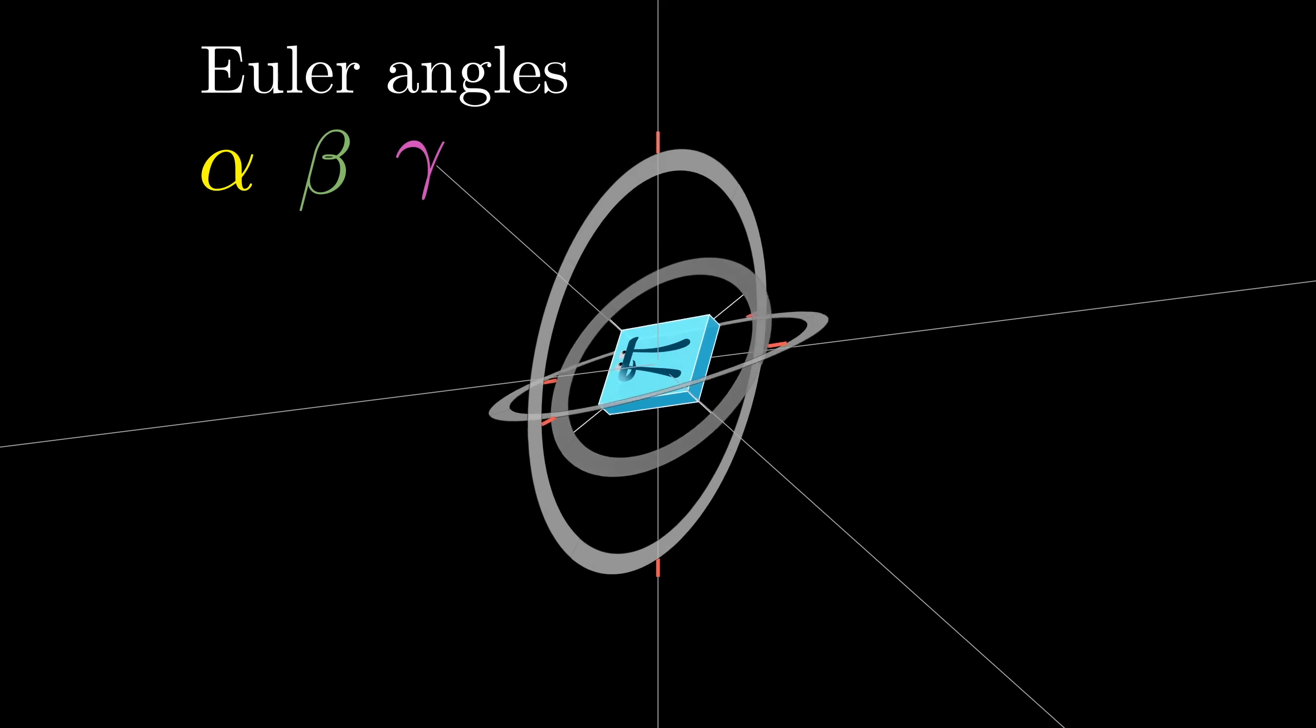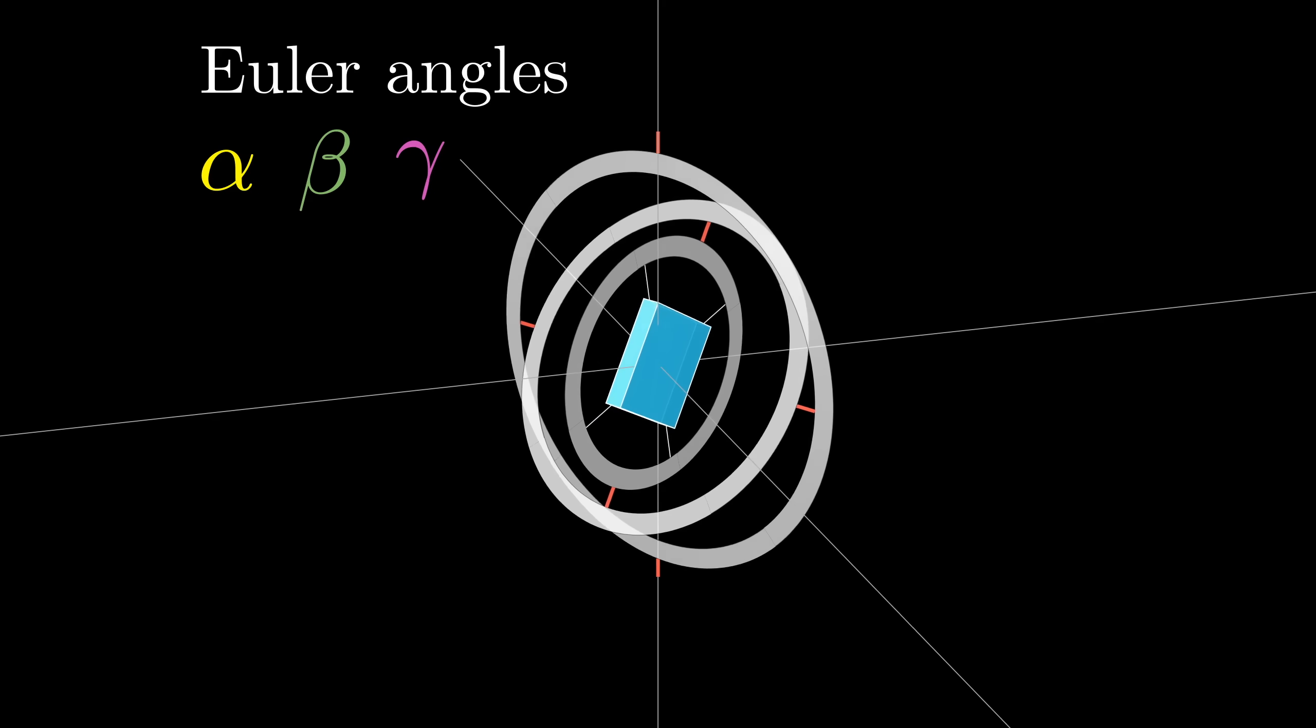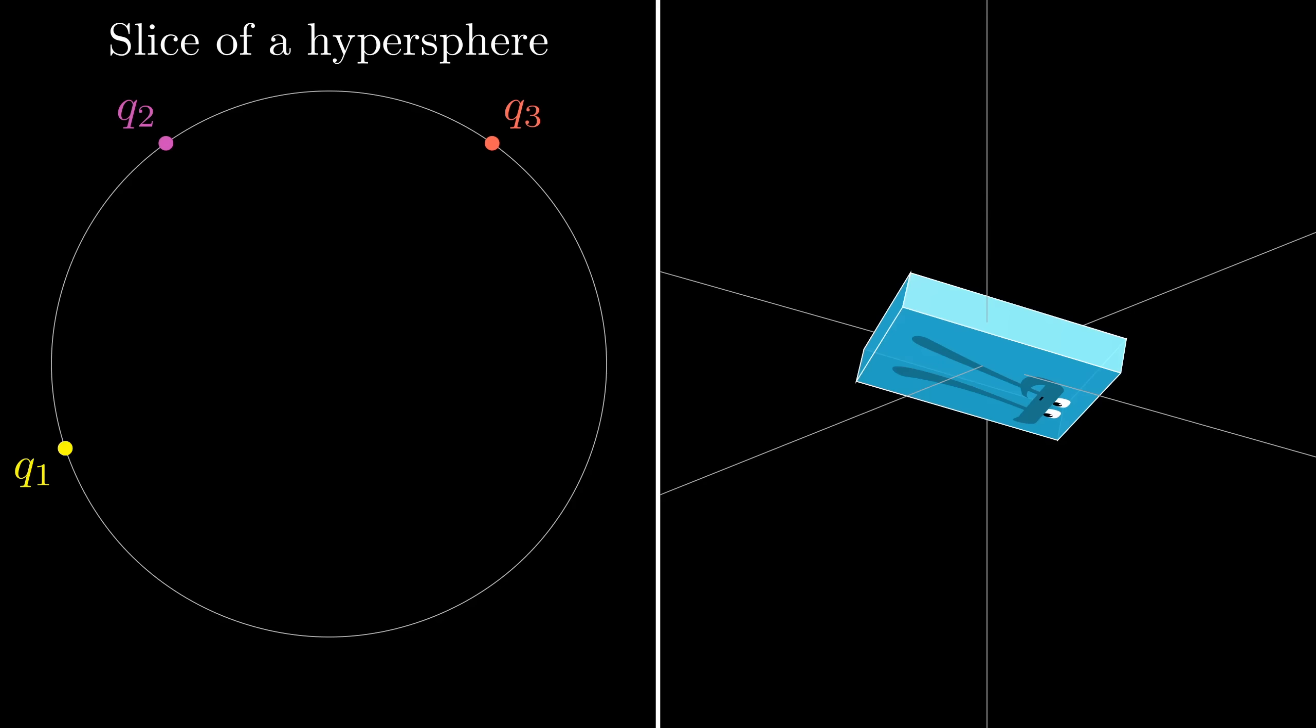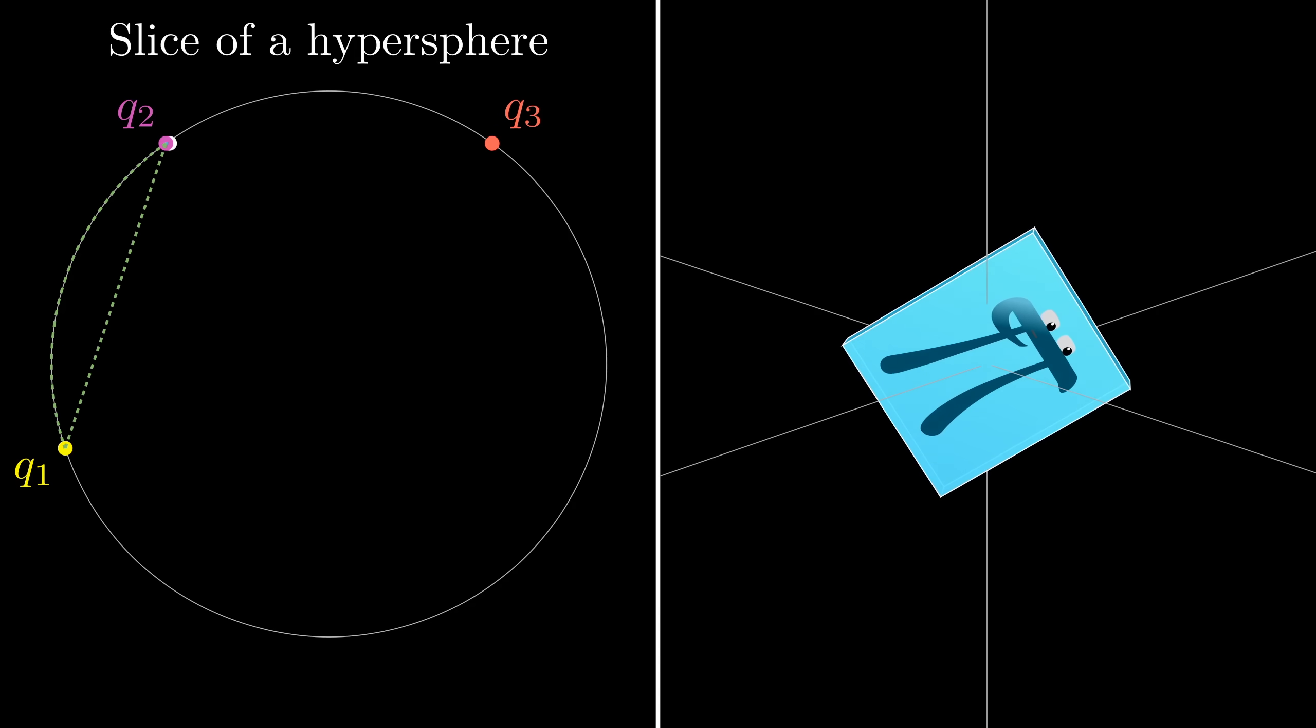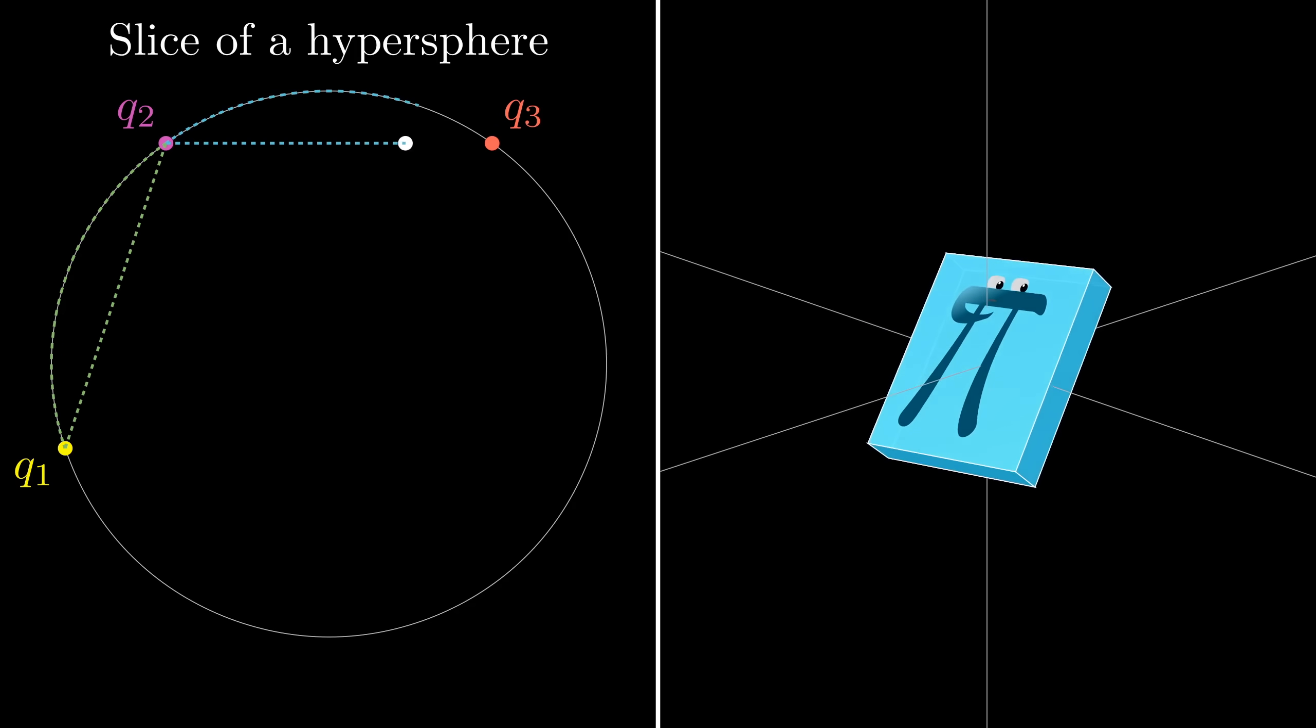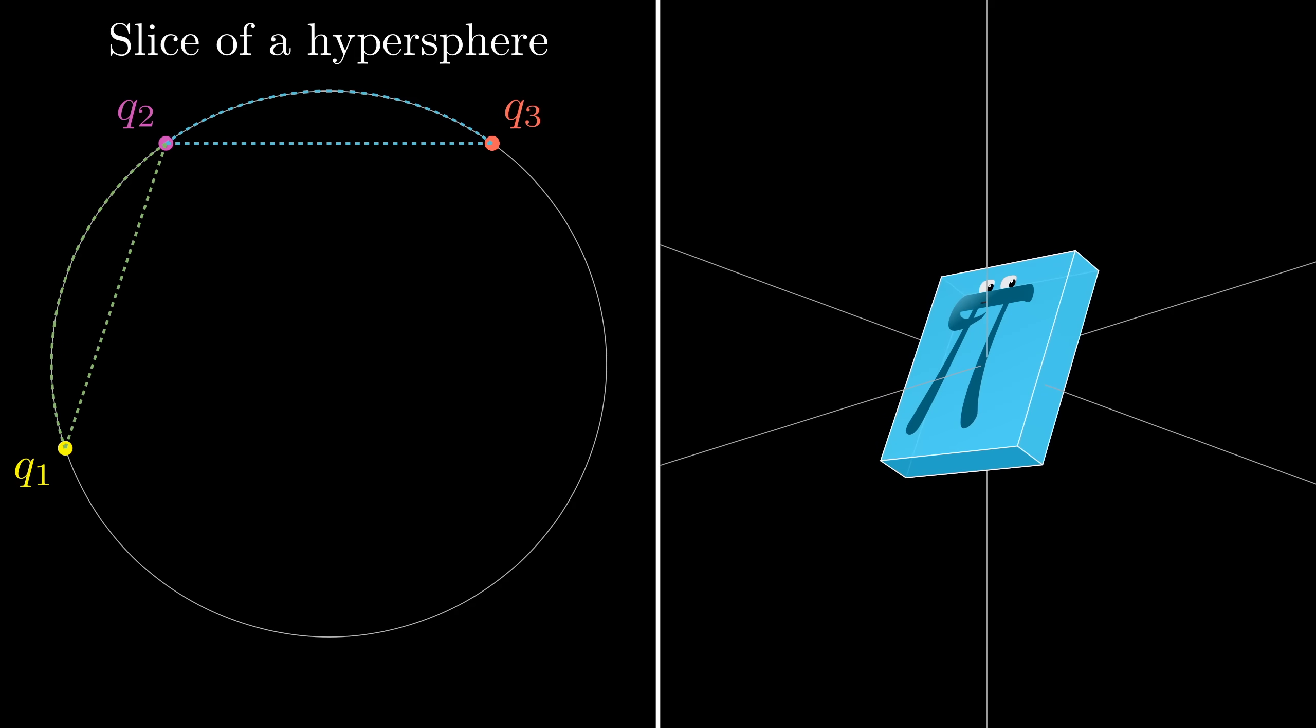Not only do quaternions avoid issues like Gimbal Lock, they give a really seamless way to interpolate between two three-dimensional orientations, one which lacks the ambiguities of Euler angles and which avoids the issues of numerical precision and normalization that arise in trying to interpolate between two rotation matrices.